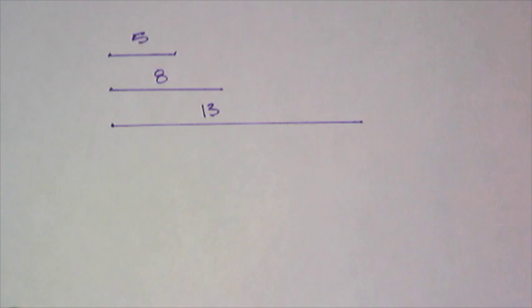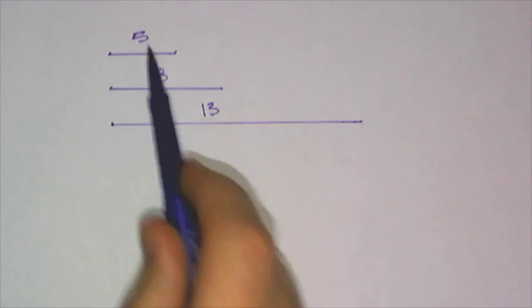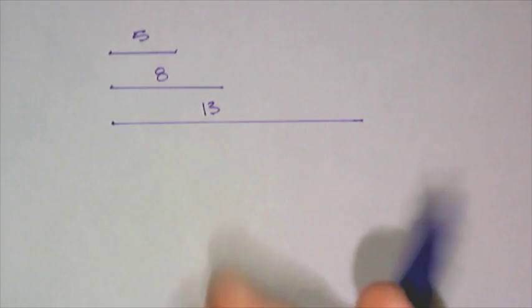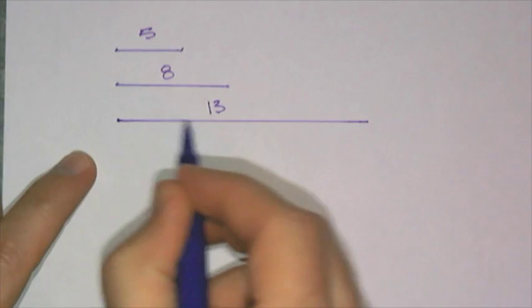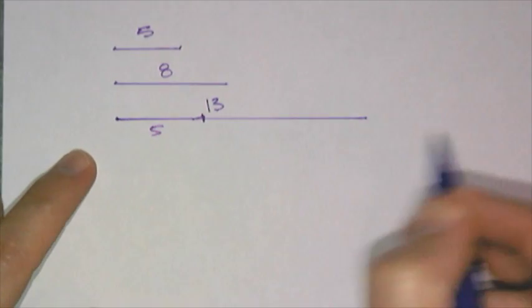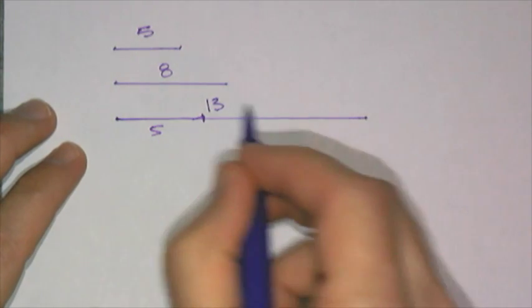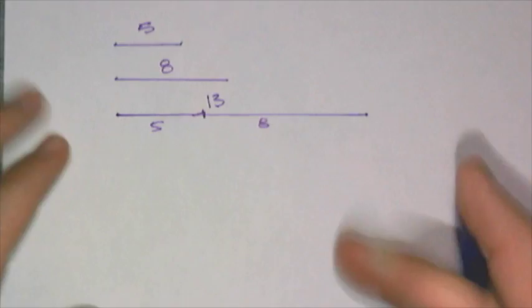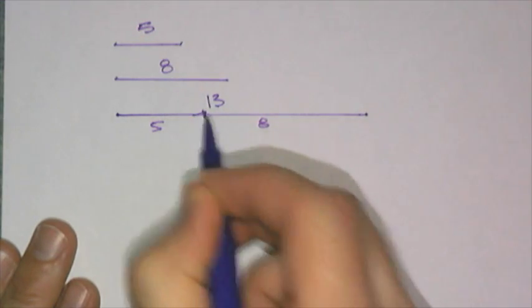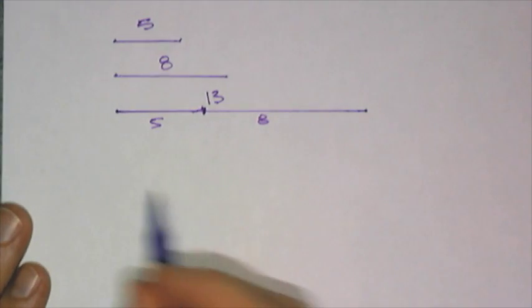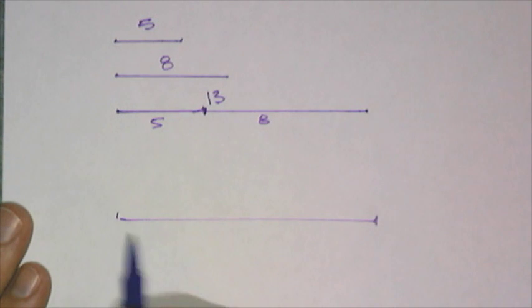Because if this side is five, this is eight, and this is thirteen. If I try to take that five and put it here, and I fit an eight, and put it here and swing an arc, the only place that they would hit is right there. Does that make sense?